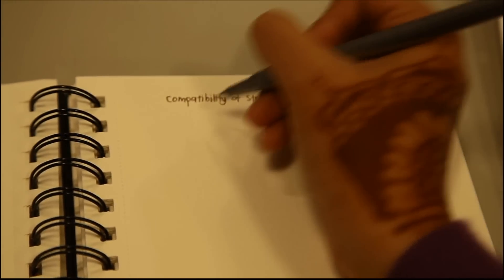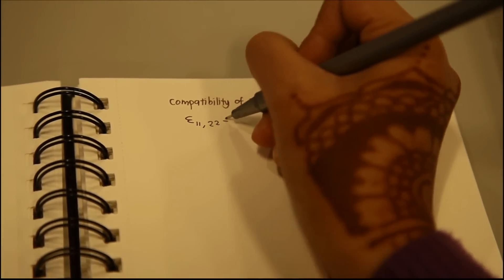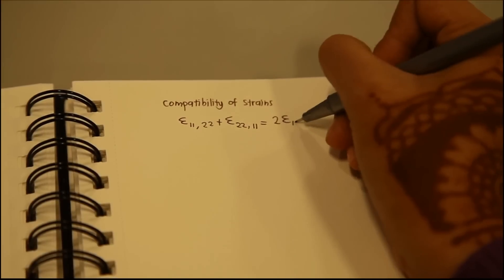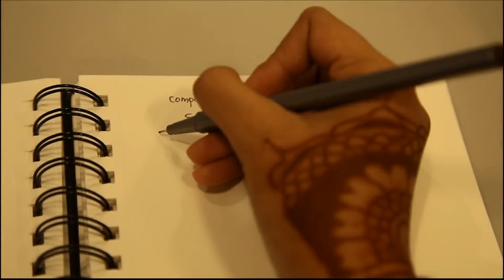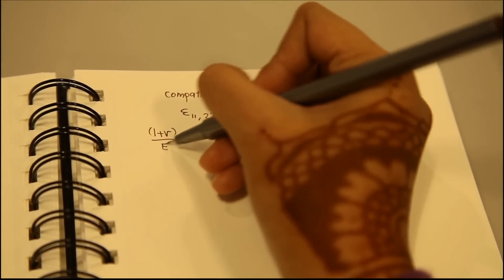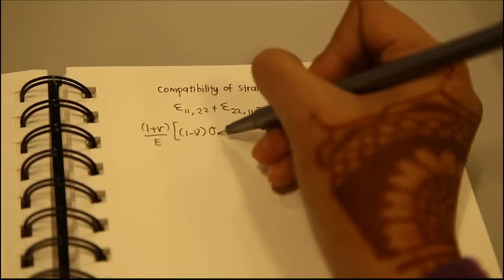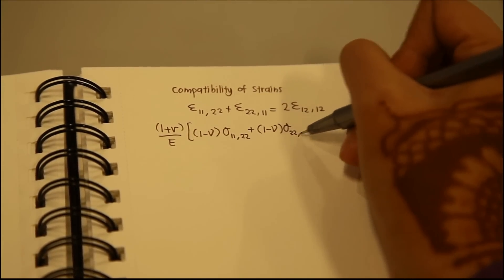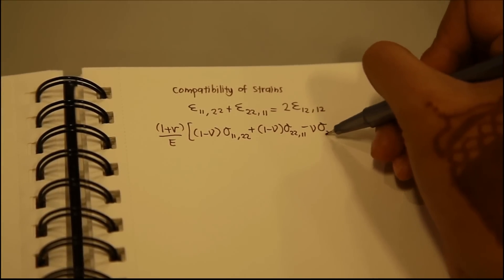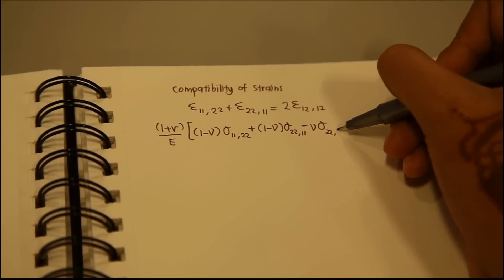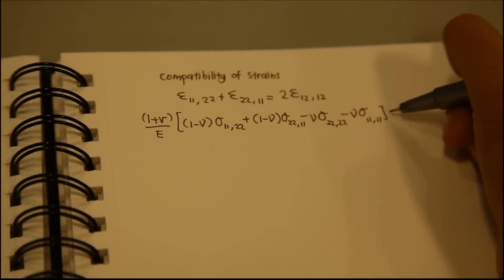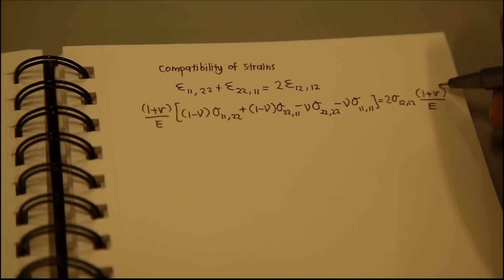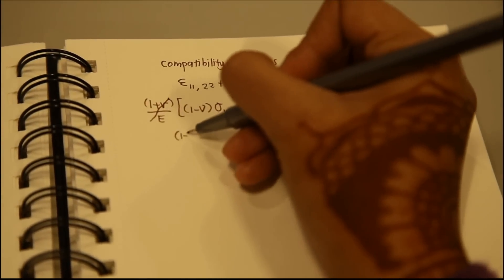Using the compatibility of strains — epsilon 1,1,22 plus epsilon 2,2,11 equals 2 epsilon 1,2,12 — and substituting the equations above, we get: (1 plus mu)/E times (1 minus mu) times (sigma 1,1,22 plus (1 minus mu) sigma 2,2,11 minus mu sigma 2,2,22 minus mu sigma 1,1,11) equals 2 sigma 1,2,12 times (1 plus mu)/E. Simplified, this gives equation 7.